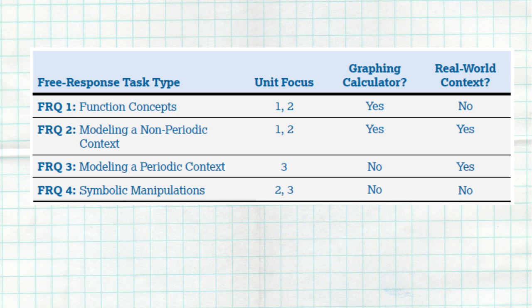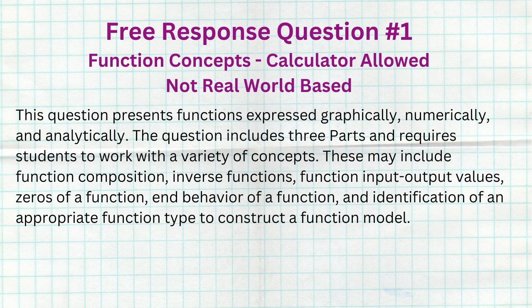The next section of the AP pre-calculus exam is four free response questions. We know exactly what each one of those four questions is going to look like — we don't know exactly what functions or modeling situation they'll use, but we know what will be asked. The first free response question covers function concepts. You'll be presented with functions expressed graphically, numerically, and analytically. The question includes three parts and may involve function composition, inverse functions, function input-output values, zeros of a function, end behavior, and identification of an appropriate function type to construct a model. A graphing calculator is allowed on this problem.